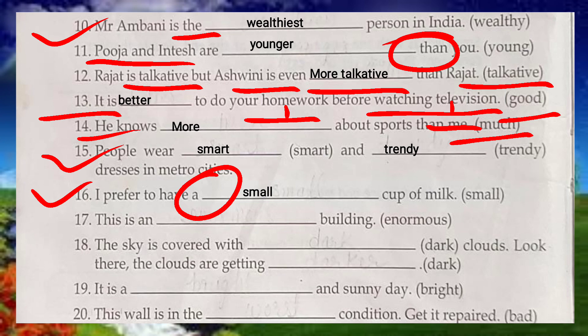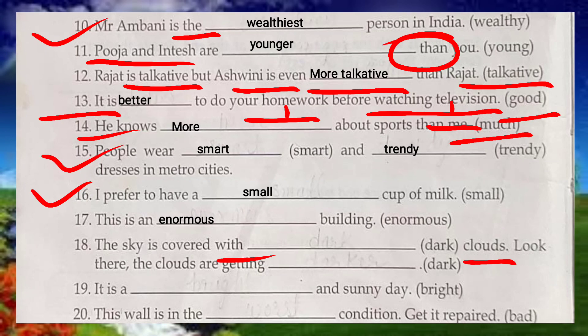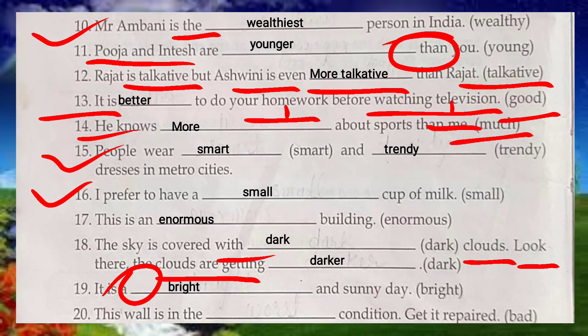'The sky is covered with dark clouds' — no comparison, so positive degree 'dark' is used. 'The clouds are getting darker' — comparison is implied, so comparative degree 'darker' is used. 'It is a bright day' — 'a' is coming, so positive degree 'bright' is used. 'This wall is the worst' — 'the' is coming, so superlative of 'bad' which is 'worst' is used.